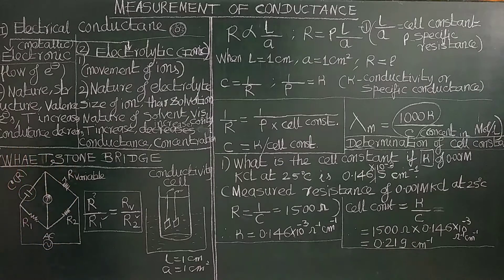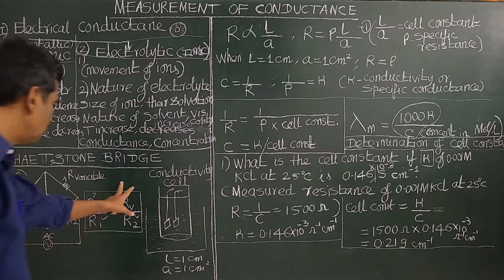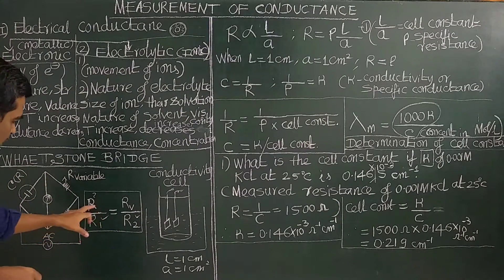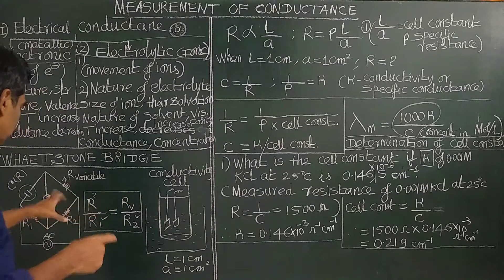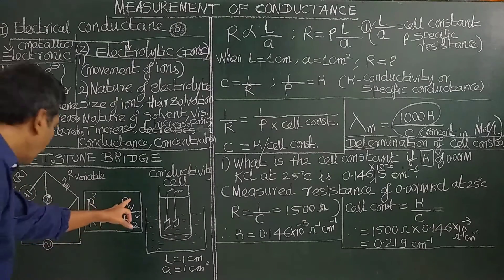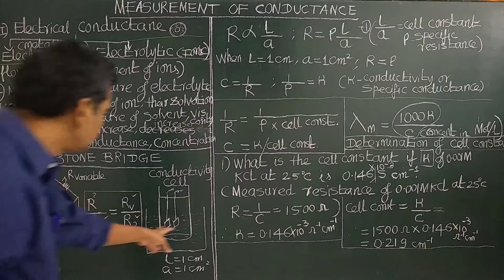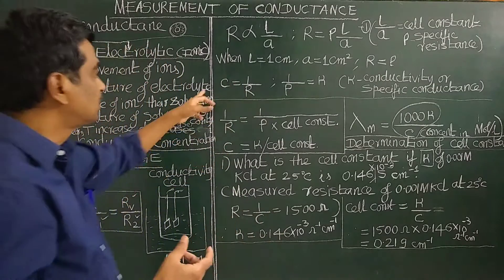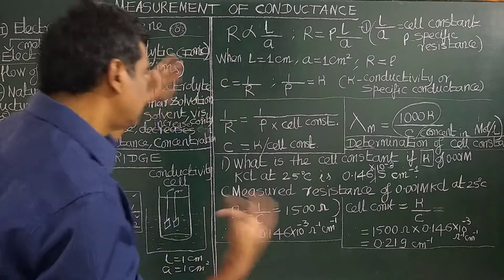Under the null deflection condition, the expression R1/R2 = R_variable/R2 is used. Since R1 is known, and the variable resistance at which null deflection occurs is known, the resistance of the electrolytic solution can be obtained. The resistance is the reciprocal of conductance, so conductance equals 1/R — once you measure the resistance, conductance can be calculated.